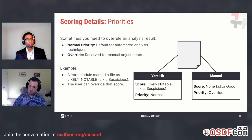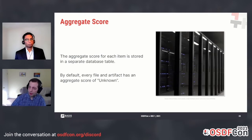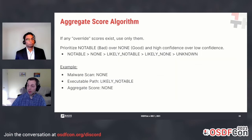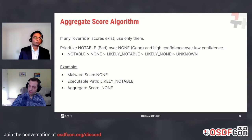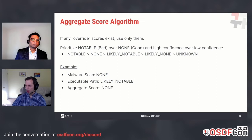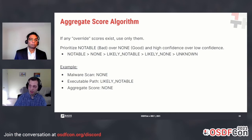Right now, the ability for a user to override a score is only available in Cyber Triage. Files and data artifacts get an aggregate score based on their child analysis results. Every file and artifact starts with an aggregate score of unknown until it has child analysis results. If a file or data artifact has an override score, that override score is used as the aggregate score despite any other scores present. The order of consideration goes: notable, none, likely notable, likely none, and then unknown.